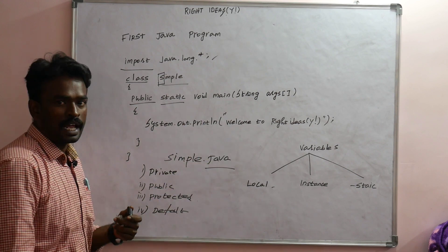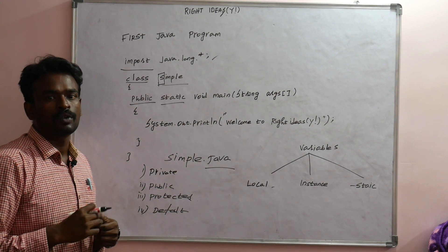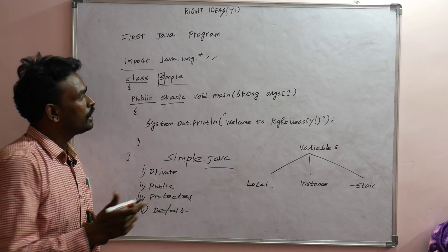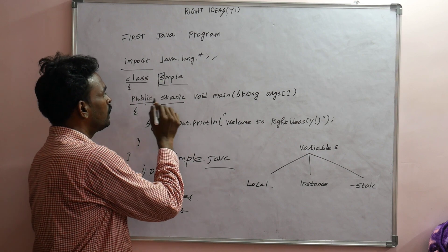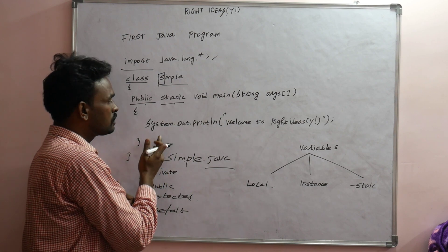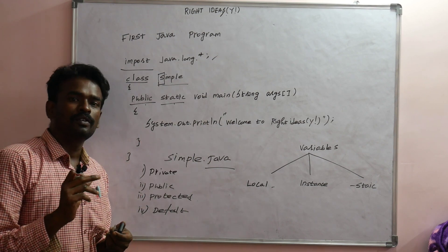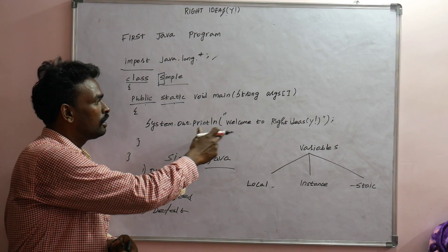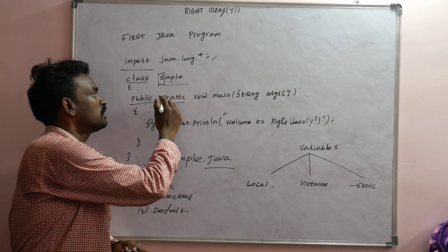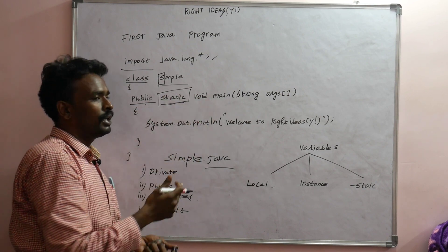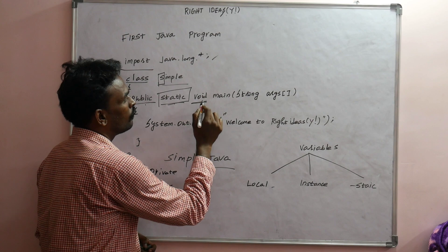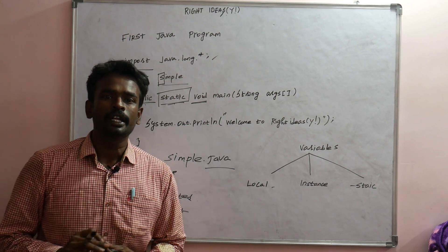The next keyword is 'static'. Static can be applied to variables and methods. In public static void main, the purpose of 'static' is that the main program runs automatically without creating an object. 'Void' means the function does not return any value. If a function returns data, you use int or another data type instead of void.